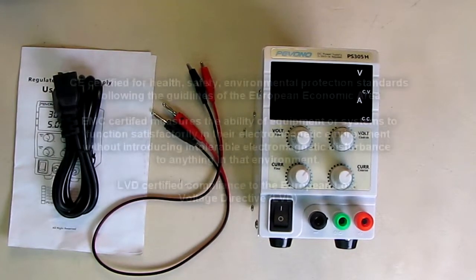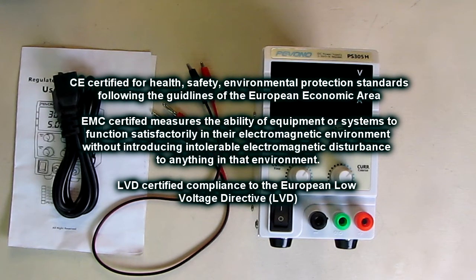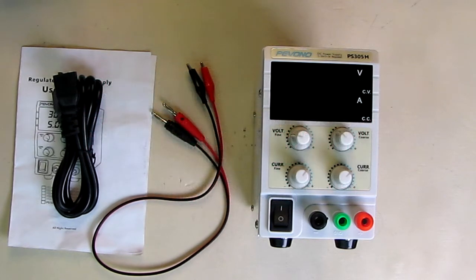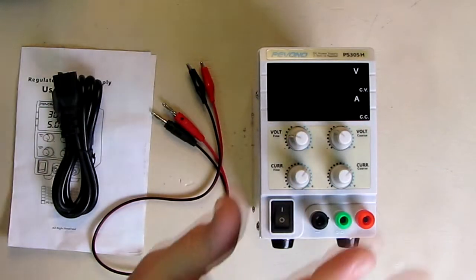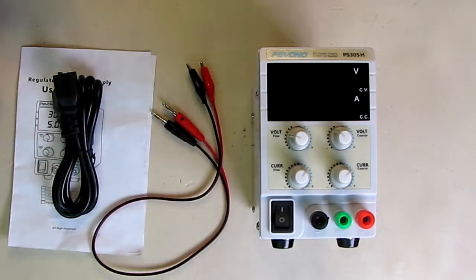This power supply has got some certifications which you want for a power supply. It has CE certified health and safety environmental protection standard which follows the guidelines of the European Economic Area. It's EMC certified which measures the ability of equipment or systems to function satisfactorily in their electromagnetic environment while not introducing intolerable electromagnetic disturbance. It's also LVD certified compliant to the European Low Voltage Directive rules. So what that's telling me is they've got the certification for the RF that this produces and also the safety of the grounding. That's good for a power supply, and this is such a good value too.